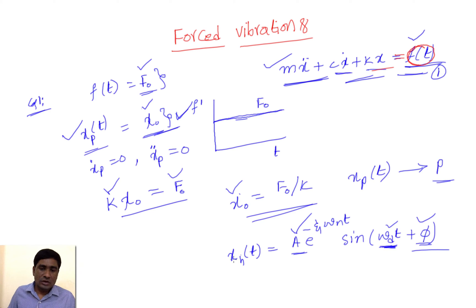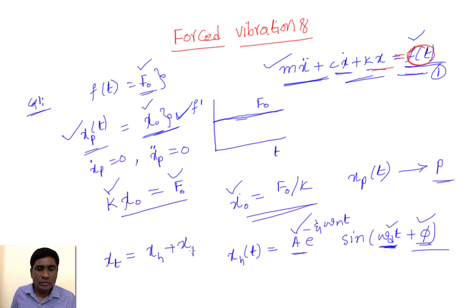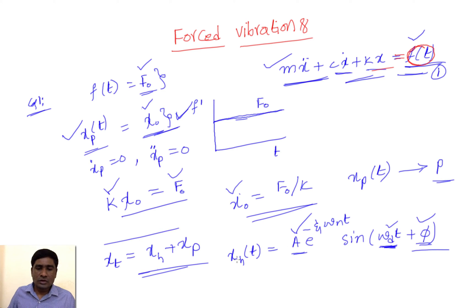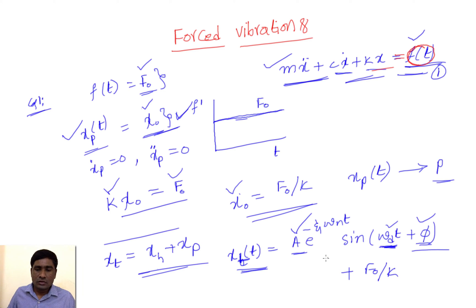The total solution is x(t) = x_h + x_p, which is the homogeneous solution plus the particular solution. The total solution equals the homogeneous part plus F₀/k as the particular part.